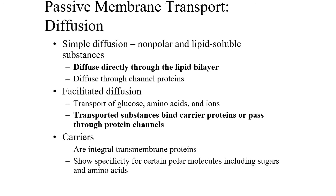The movement of substances between cells can occur in a couple of ways. For both passive and active transport, the overriding principle is often moving down a concentration gradient — from one side with a lot to the other side with very little. With active transport, substances can also be moved against their gradient. Simple diffusion is relatively simple — substances just go right through the lipid bilayer from higher to lower concentration without needing special structures.